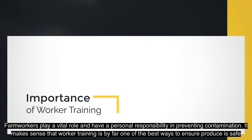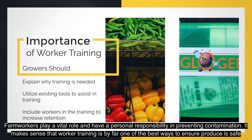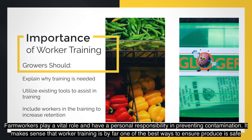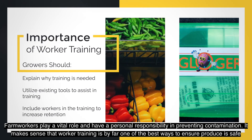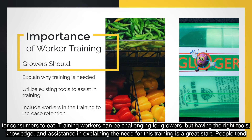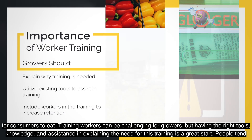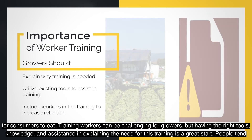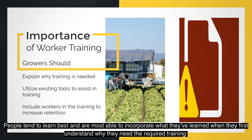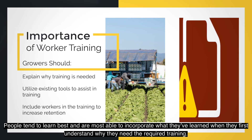Farm workers play a vital role and have a personal responsibility in preventing contamination. Worker training is by far one of the best ways to ensure produce is safe for consumers to eat. Training workers can be challenging for growers, but having the right tools, knowledge, and assistance in explaining the need for this training is a great start. People tend to learn best when they first understand why they need the required training.